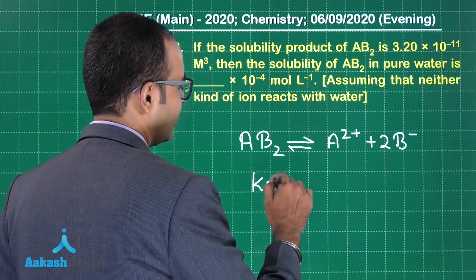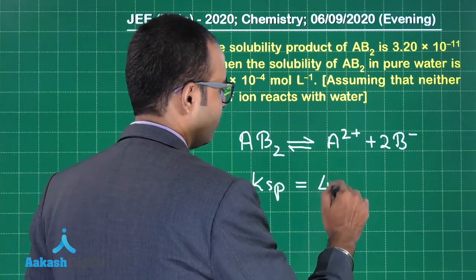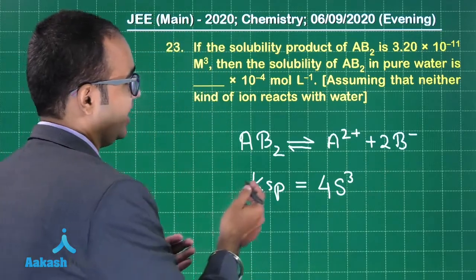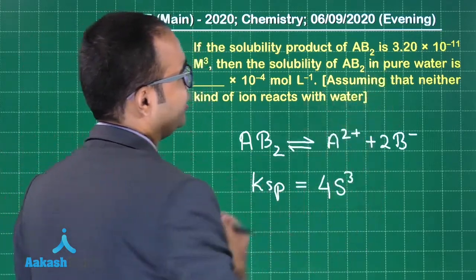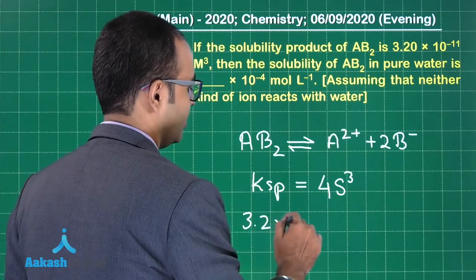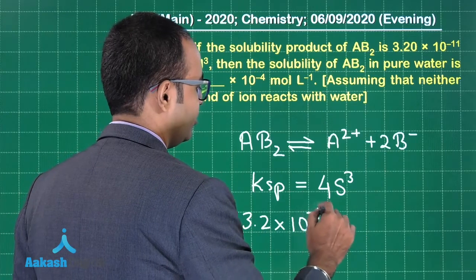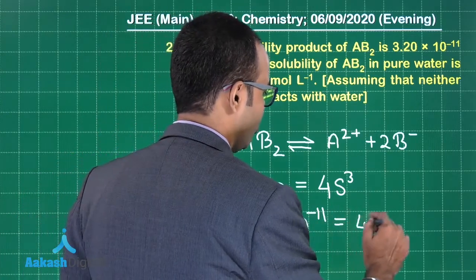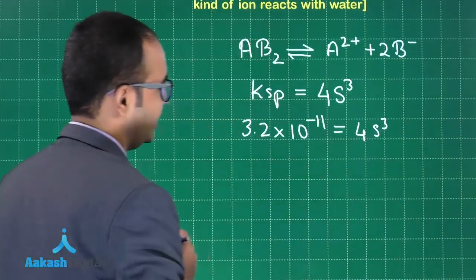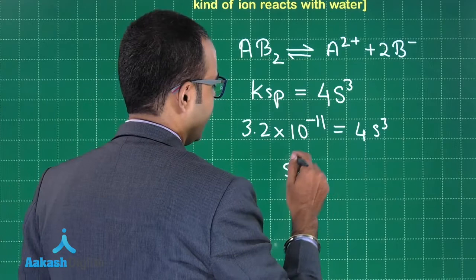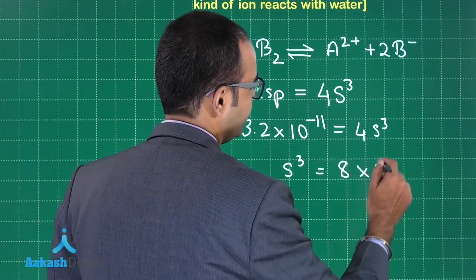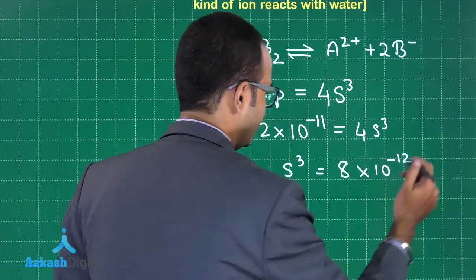Ksp = 4s³. What is Ksp? Ksp is 3.2 × 10⁻¹¹, which equals 4s³. So s³ = 8 × 10⁻¹², therefore s = 2 × 10⁻⁴.